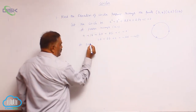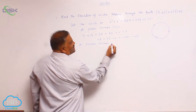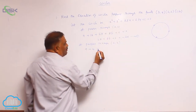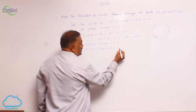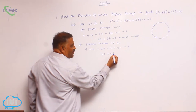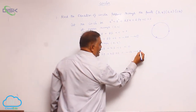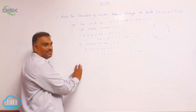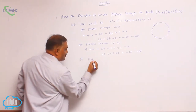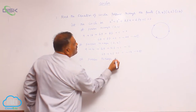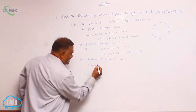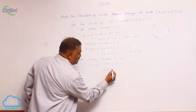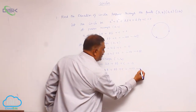Again, the circle passes through the second point (3, 2). Substituting: 9 + 4 + 6g + 4f + c = 0, so 6g + 4f + c = −13. This is equation 2. It also passes through the third point (1, 4): 1 + 16 + 2g + 8f + c = 0, giving 2g + 8f + c = −17. This is equation 3.